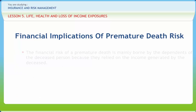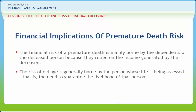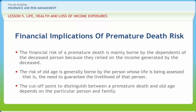The financial risk of a premature death is mainly borne by the dependents of the deceased person, because they relied on the income generated by the deceased. The risk of old age is generally borne by the person whose life is being assessed, i.e., the need to guarantee the livelihood of that person. The cut-off point to distinguish between a premature death and old age depends on the particular person and family. This distinction was made at the beginning of the 20th century.